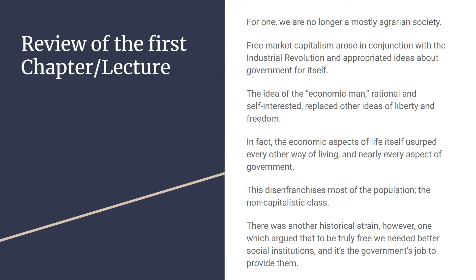Even though capitalism and the economic aspects of life came to dominate government, there were other strains still arguing against it. A new strain came up thinking, okay, there are certain things the population needs to flourish, and if we don't have them, we won't flourish — it's the government's job to provide them. If you took a look at FDR's fireside chat, you can see that his New Deal is sort of one of the very first expressions in the United States of this idea that it's the government's job to protect our basic needs so we can flourish, and those are social institutions.